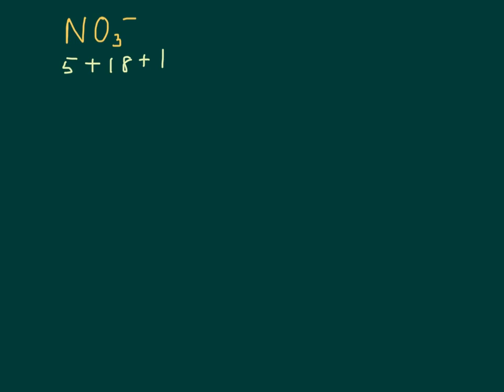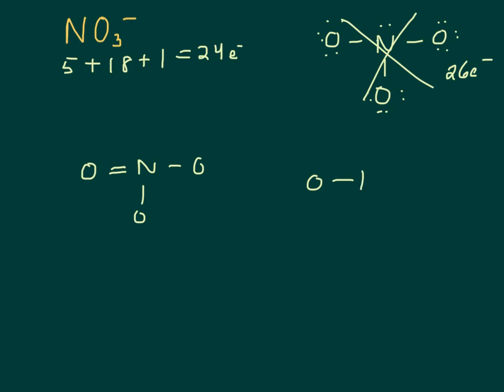So this polyatomic ion nitrate has 24 electrons. So let's assume the nitrogen is in the middle, which it is. So we assume all single bonds and we give everybody 8. And if I count, I've got 26. So two extra means I'm wrong and I need a double bond. So I can put it on the left. Or I can put it on the right. Or I can put it on the bottom. So how many resonance structures does nitrate have? Three.